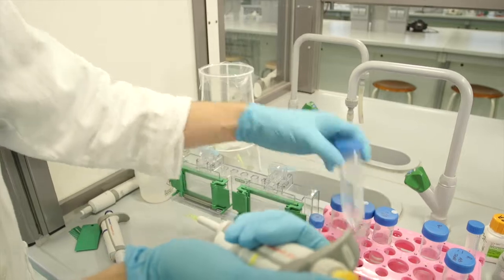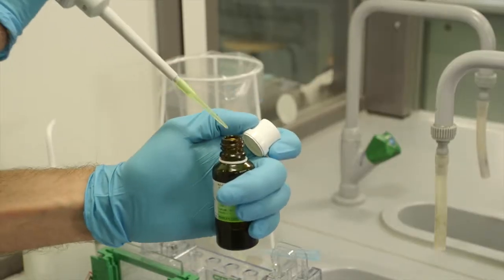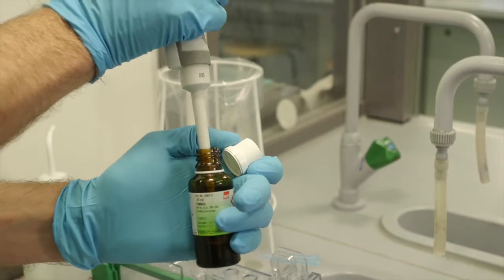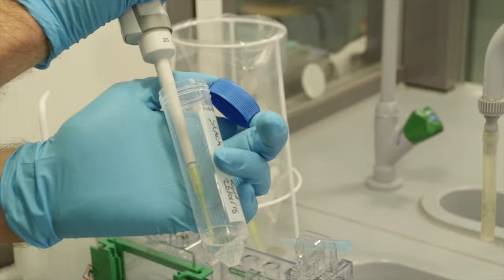While waiting, make the stacking gel. Calculate the volumes that are needed for making the stacking gel. Pipette the required volumes into a tube. Add the Temed and the APS last, as this will cause the solution to polymerize.